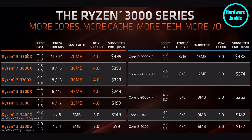Basically, the last three digits just indicate tiering in the product stack. A 3200 is fairly low in the product stack. A 3700 is pretty close to the top. A 3900 is almost the highest — there's actually one chip higher, the 3950X. A higher digit simply means a better position in the product stack. That's fairly easy to understand.